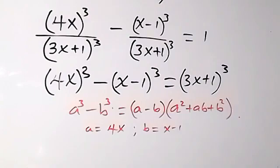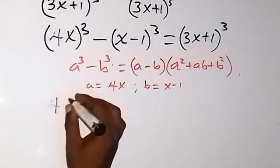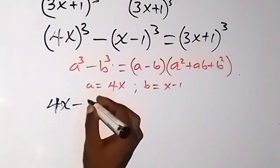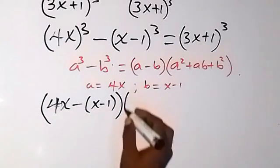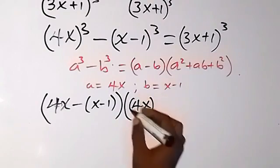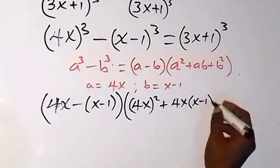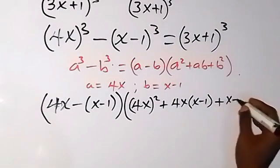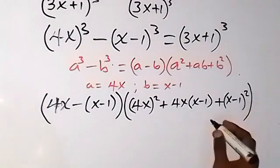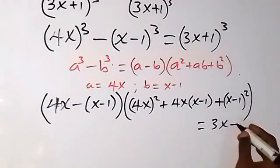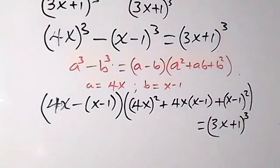We replace and rewrite what we have on the left-hand side of this equation. It becomes (a minus b), that's 4x minus (x minus 1), multiplied by a squared, that's (4x) squared, then plus ab, that's 4x times (x minus 1), then plus b squared, that's (x minus 1) squared. On the right-hand side we have (3x plus 1) raised to power 3.